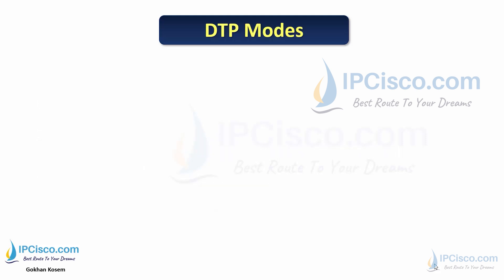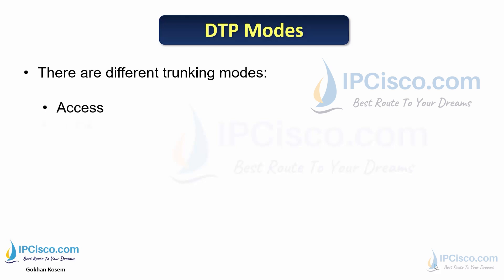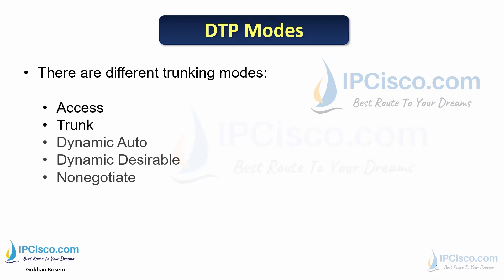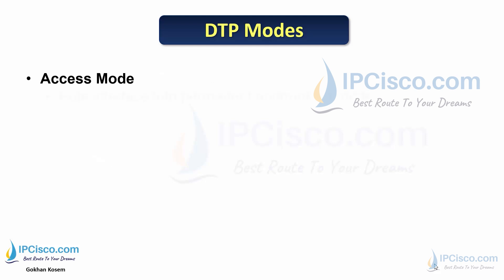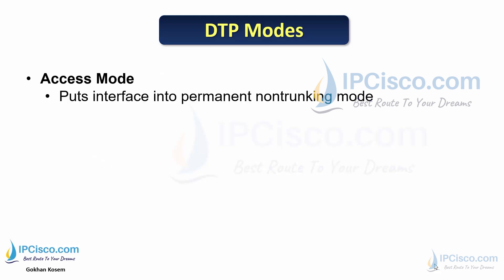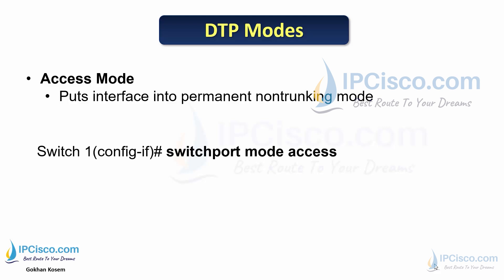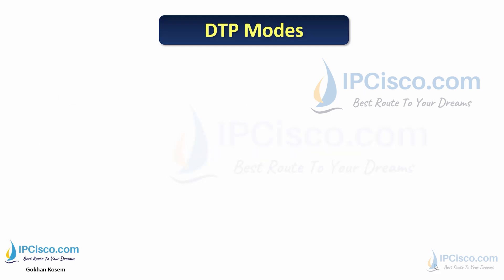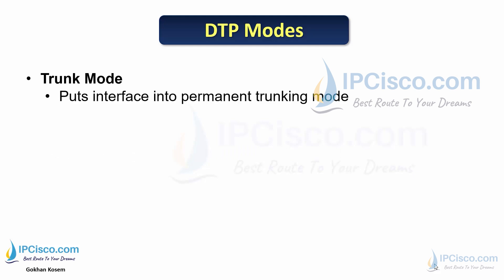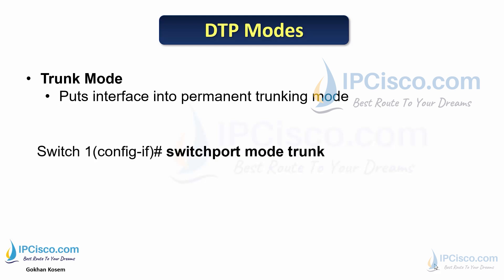There are different DTP trunking modes: access, trunk, dynamic auto, dynamic desirable, and non-negotiate. Access mode puts the interface into permanent non-trunking mode and is used on access ports; configured with the 'switchport mode access' command. Trunk mode puts the port into permanent trunk mode for manual trunk configuration; configured with the 'switchport mode trunk' command.